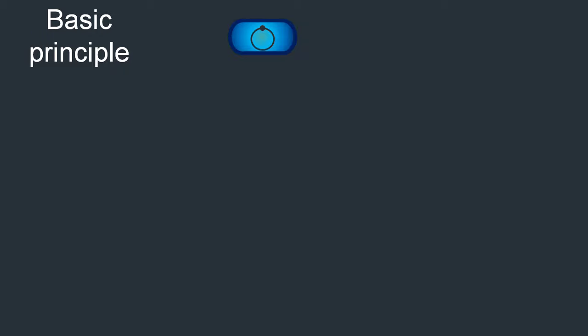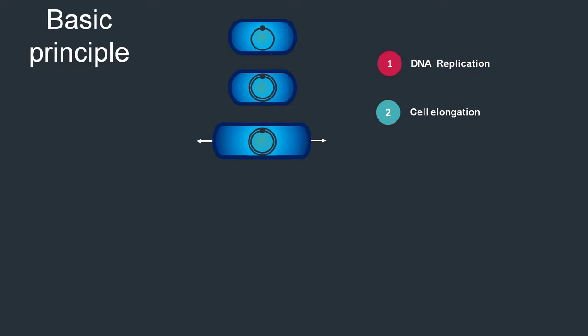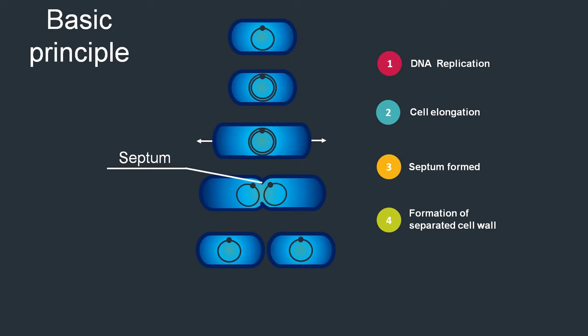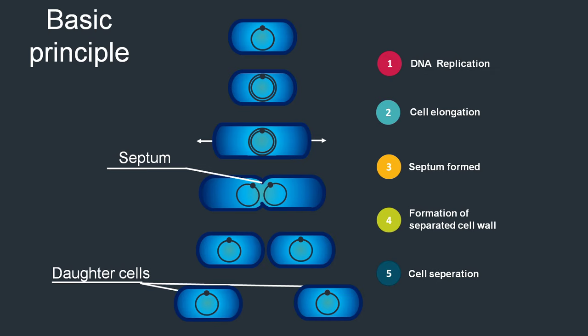In general, a single cell grows until it is divided into two cells. In an early step of cell division, the existing chromosome is replicated to ensure that every daughter cell gets a copy of the genetic material. During cell division, cells often grow in size — like this rod-shaped E. coli bacterium you can see here — elongating until it reaches about twice the length of a single cell. At this point a partition wall is formed, the so-called septum.